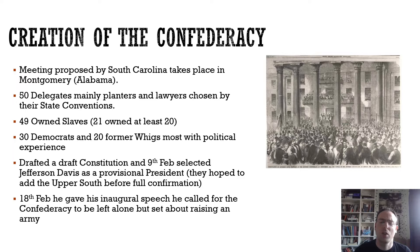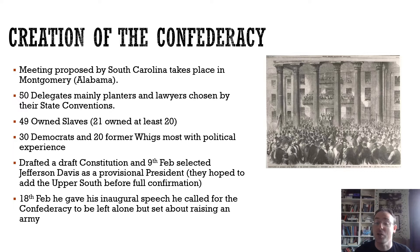Jefferson Davis was unanimously chosen as provisional president — all provisional and draft at this point because they were hoping the upper South would join before full confirmation. On the 18th of February, Jefferson Davis gave an inaugural speech calling for the Confederacy to be left alone. But alongside legal measures, he also started raising an army. So on one hand he was saying leave us alone; on the other hand he was preparing to defend the Confederacy.